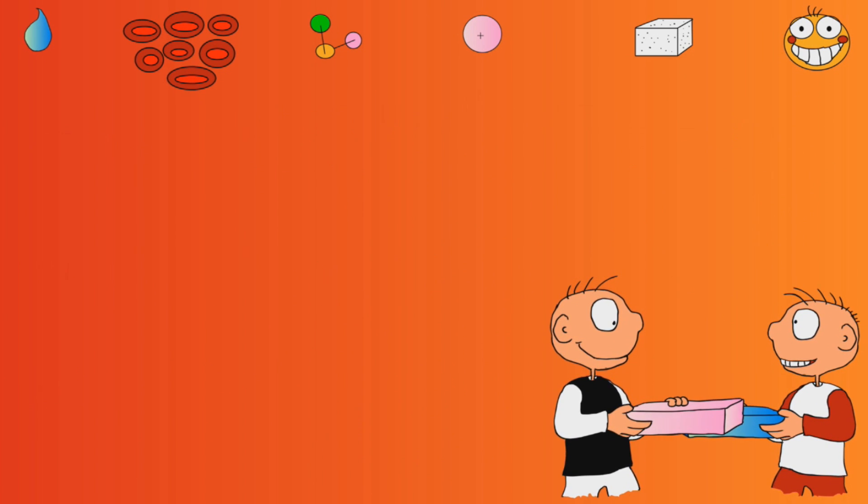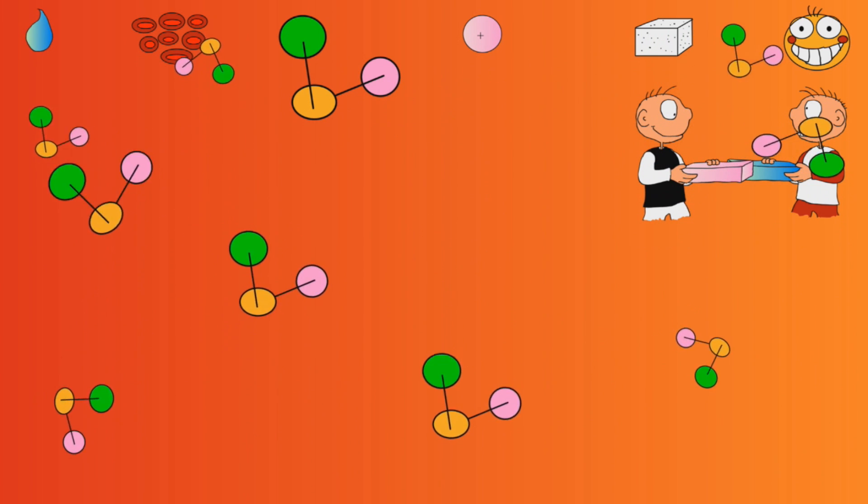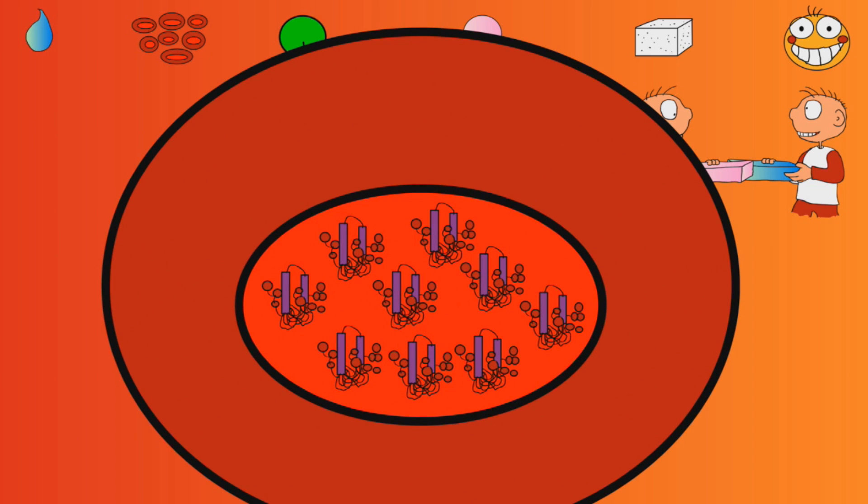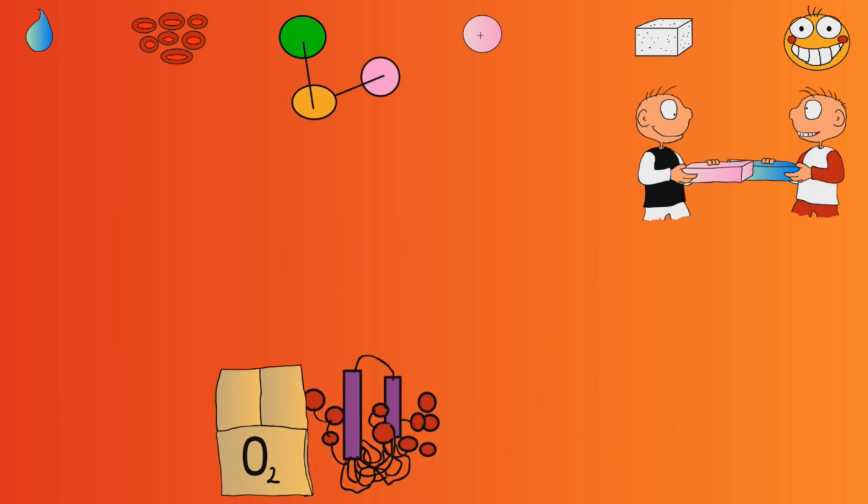But your body also makes tons of proteins that are floating around in your blood. The most important protein of them all is hemoglobin, which is located inside your red blood cells. Red blood cells are just a giant bag of almost all hemoglobin. Hemoglobin is a protein that carries up to 4 oxygen molecules and delivers oxygen to where it's needed in your body.